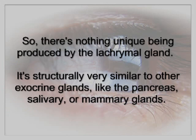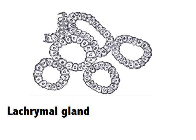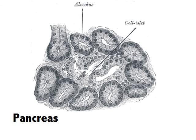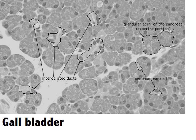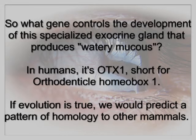So tears are very similar to saliva and mucus — there's nothing unique being produced by the lacrimal gland. It's also structurally very similar to other exocrine glands, like the pancreas, salivary, and mammary glands. Here's the lacrimal gland compared to the pancreas and the gallbladder.